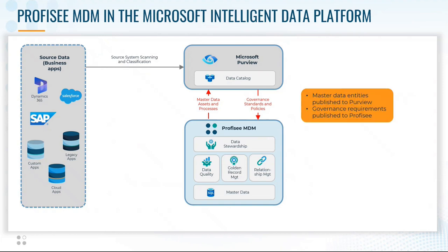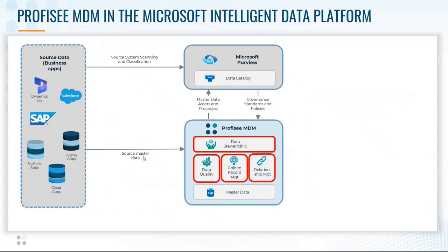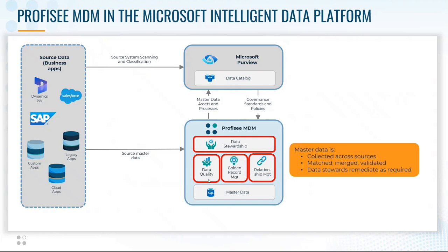So now we're ready to load data. We load source master data from the legacy systems or all of these data sources, and they're subject to data quality processing, golden record management — which is the matching and merging of them into a golden record — validation, and where the data fails validation, data stewards can step in and remediate as required. So now we've got some certified valid data.